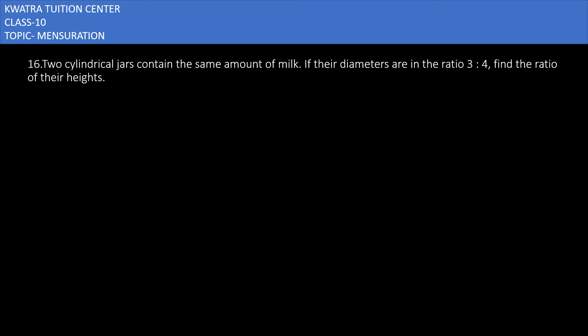Let's start with question number 16. It says two cylindrical jars contain the same amount of milk. If their diameters are in the ratio 3:4, find the ratio of their heights.